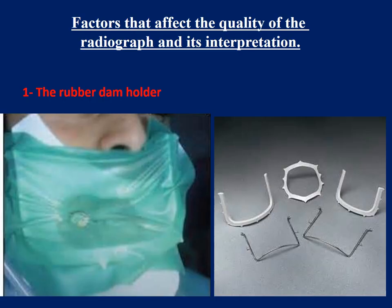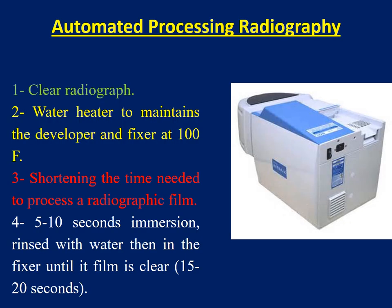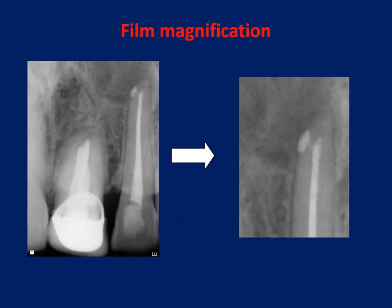Factors that affect the quality of the radiograph and its interpretation: First, the rubber dam holder — if we use the metal rubber dam holder, this might interfere with the X-ray because it affects the X-ray path to the film. Automated processing radiography gives a clear picture and shortens the time needed to process the radiograph. Film magnification is very helpful in cases involving lateral canals where there is controversy about which area is the cause of a large lesion.